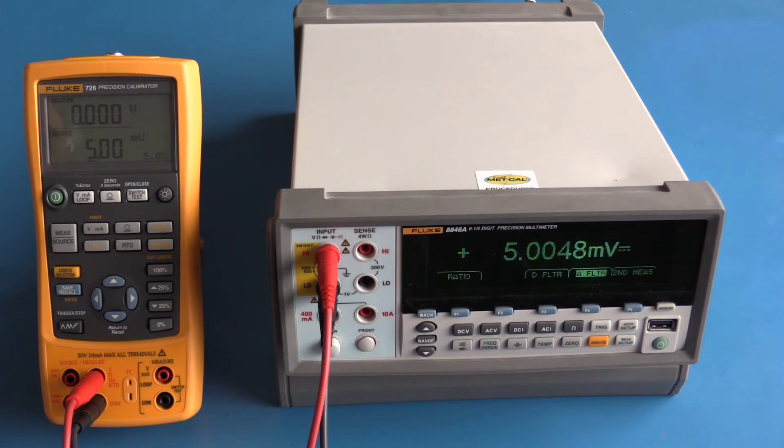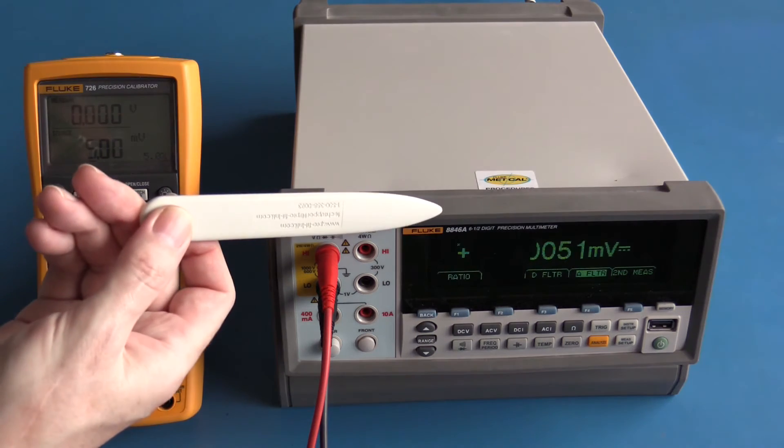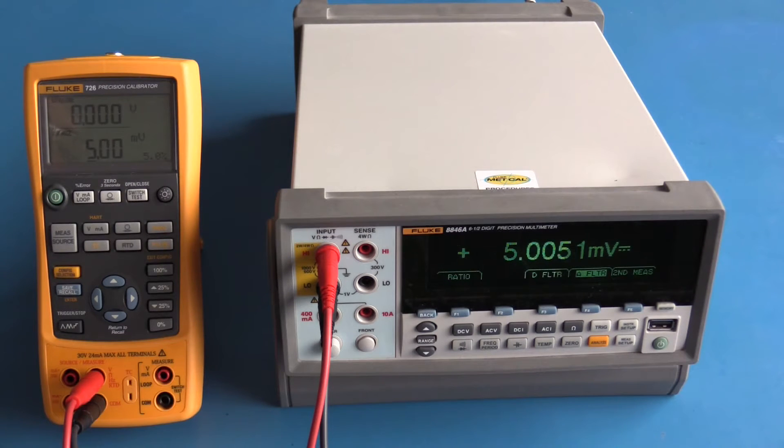I have the Fluke 726 setup to source five millivolts and the bench multimeter is showing that five millivolts. The setup I have for making this measurement is five and a half digits with an integration time of one PLC. I can change that.